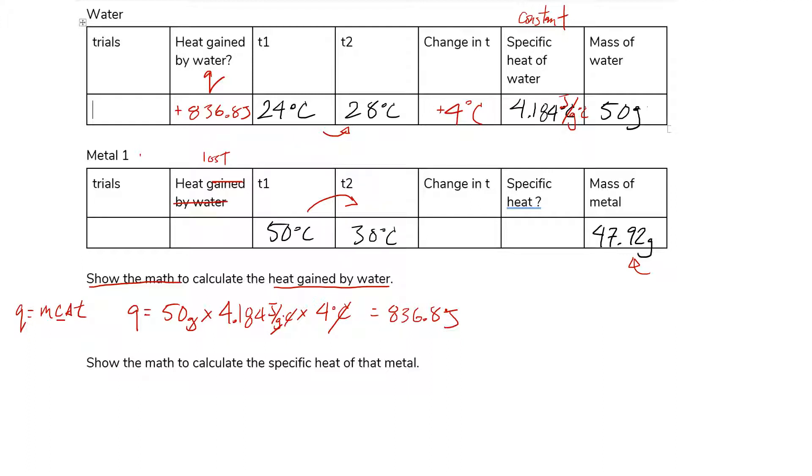The metal got cooler. And of course, whatever is gained by the water must have been lost by the metal. So the metal lost 836.8 joules. Does that make sense? As the water was getting warmer, the metal was losing heat, it was obvious that the metal was giving its heat to the water, right?